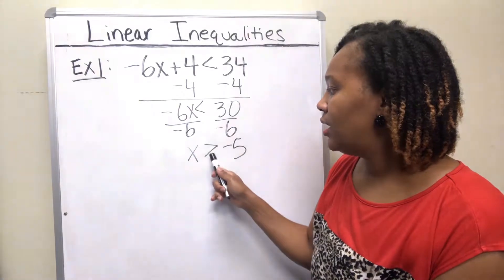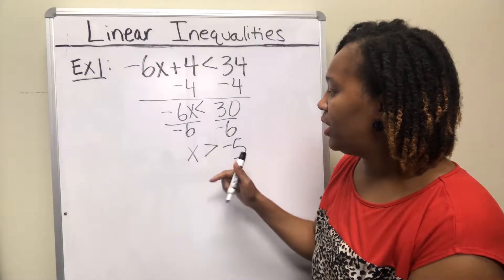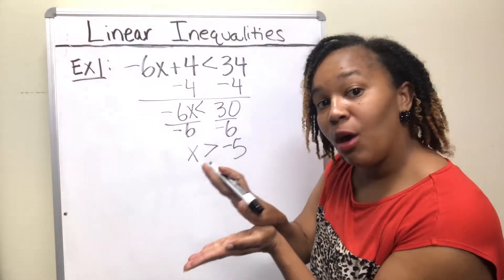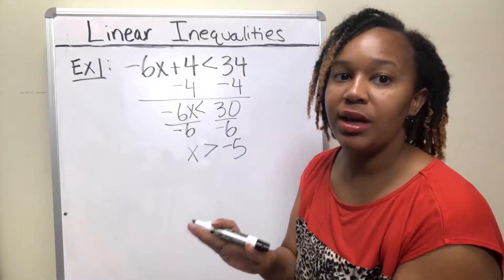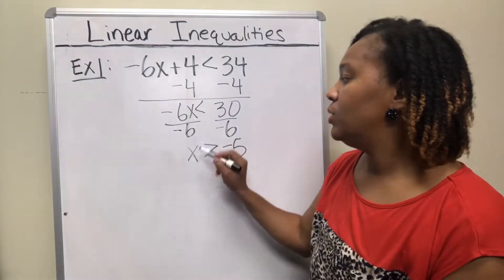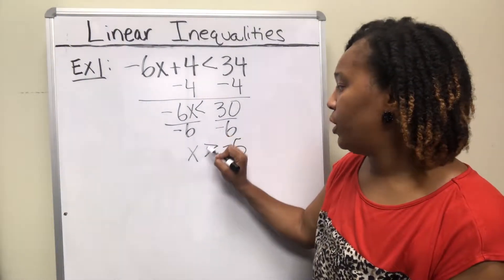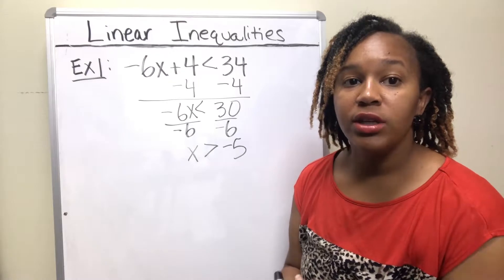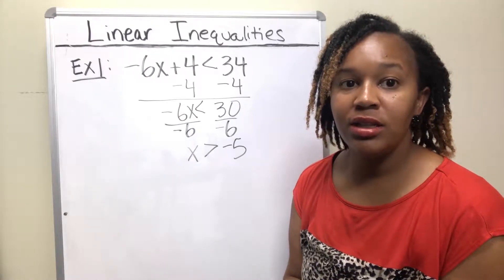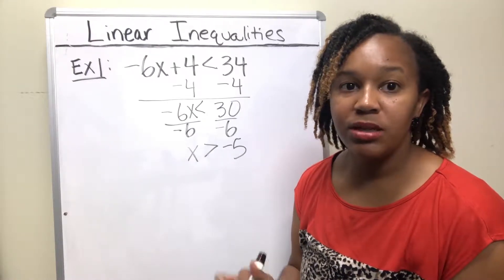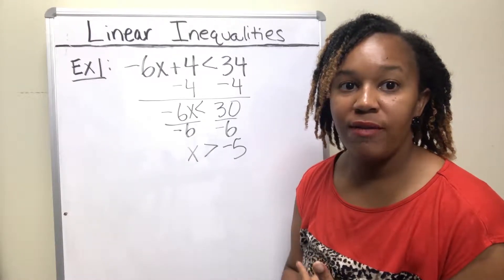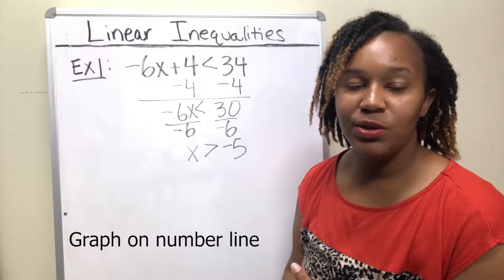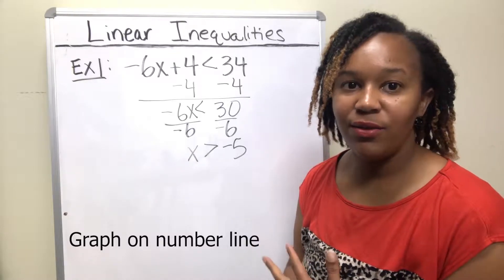This is an inequality symbol — think of it as the open mouth, with the open portion going towards the bigger side. So this reads x is greater than negative 5. When solving inequalities, you'll sometimes be asked to graph them on the number line and also to write your answer in interval notation.